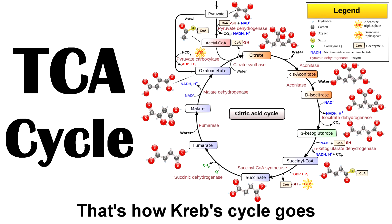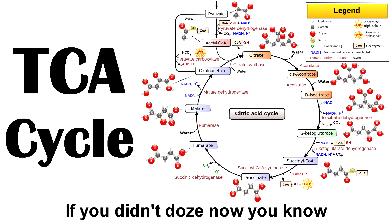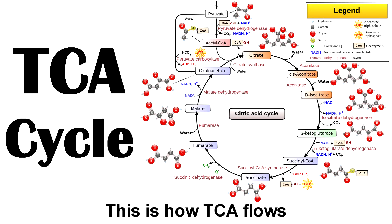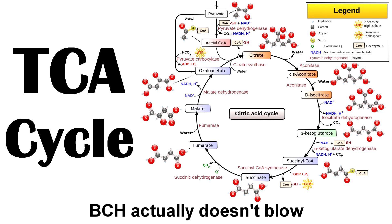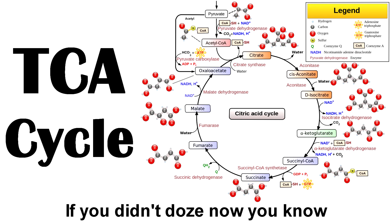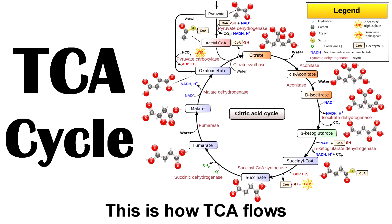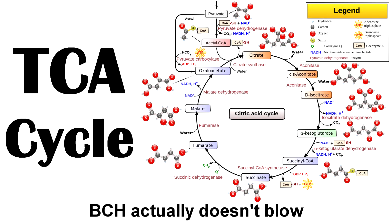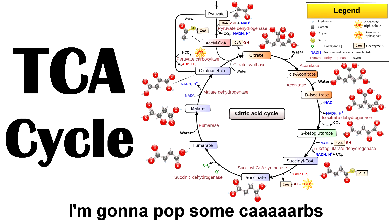That's how the Krebs cycle goes. If you didn't know, now you know. This is how TCA flows — BCH actually doesn't know. That's how Krebs cycle goes, if you didn't know, now you know. This is how TCA flows.